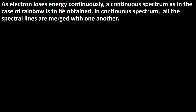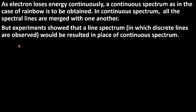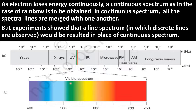As electron loses energy continuously, a continuous spectrum, as in the case of rainbow, is to be obtained. In continuous spectrum, the colors are merged with one another. But experiments showed that a line spectrum, in which discrete lines are observed, would be resulted in place of continuous spectrum. This figure shows the continuous spectrum — the rainbow colors, or visible spectrum — where one color is merged with its next color. Thus it is referred as continuous spectrum.